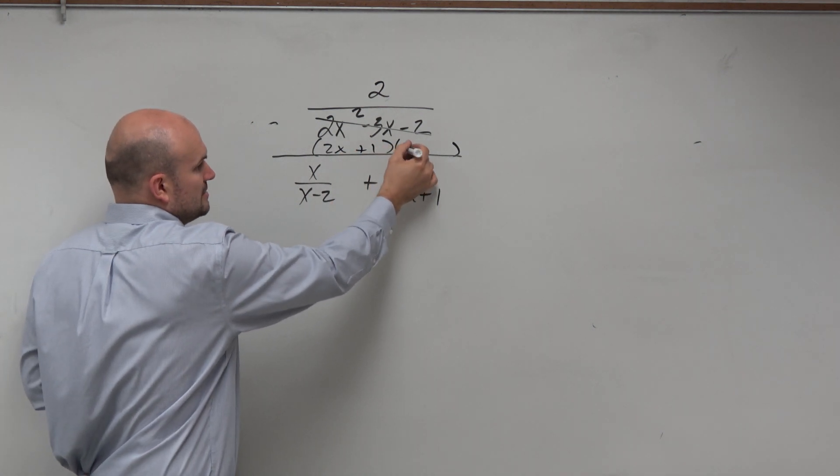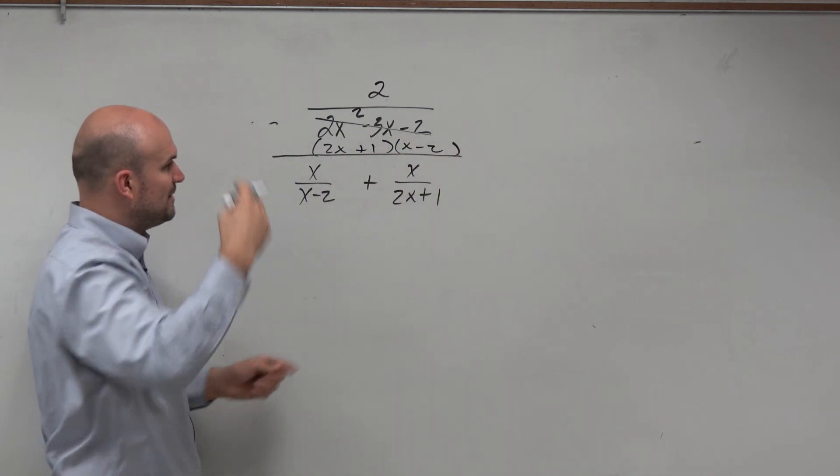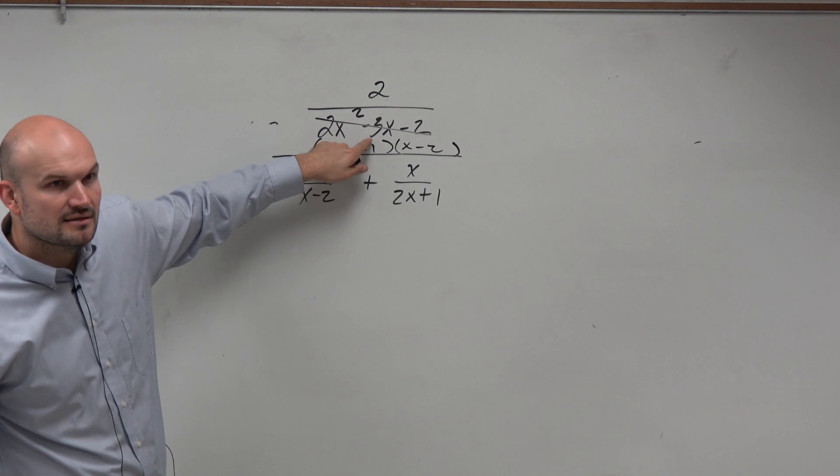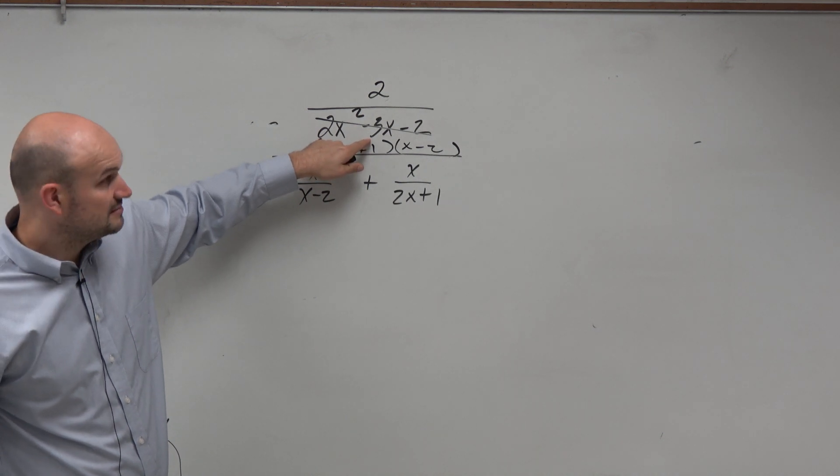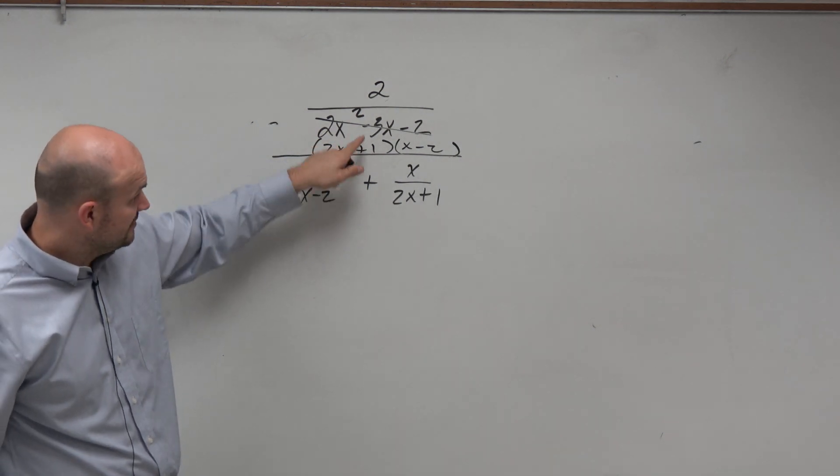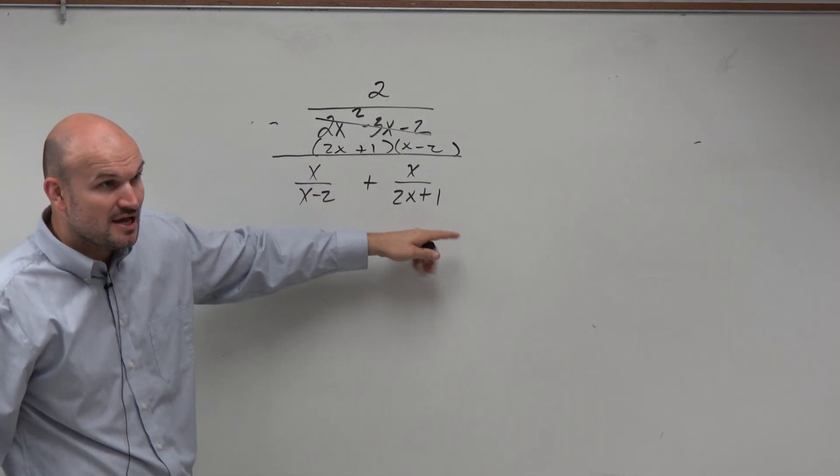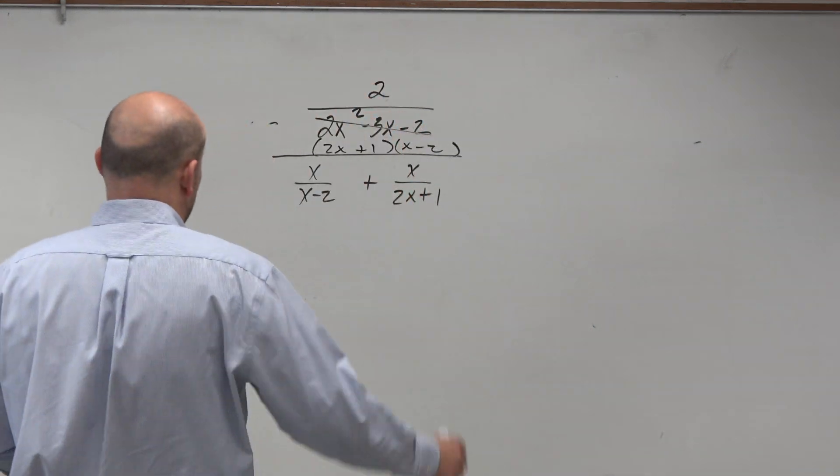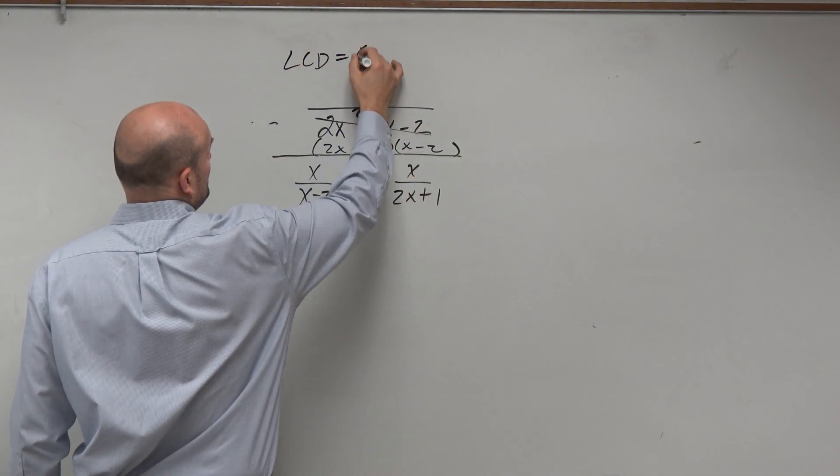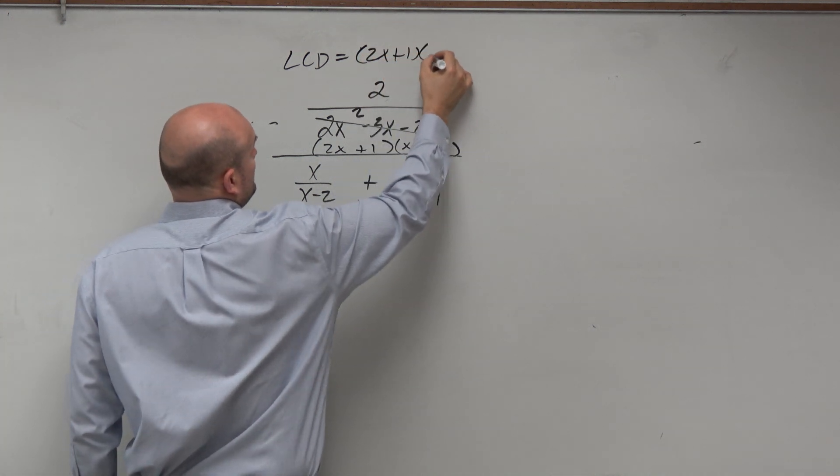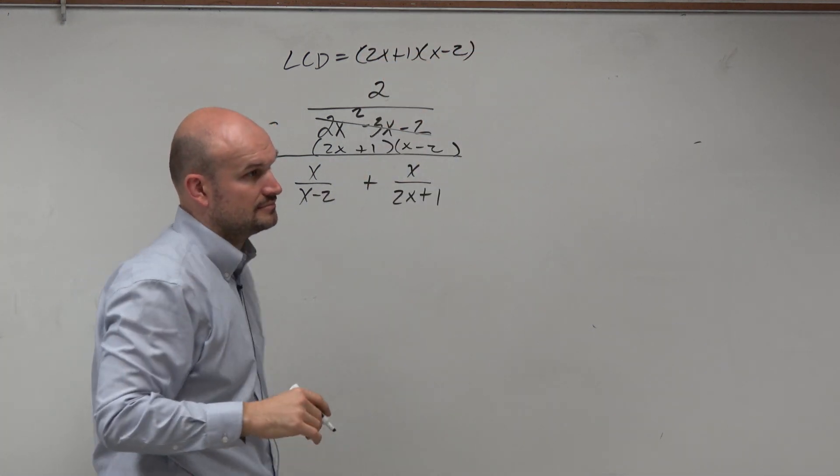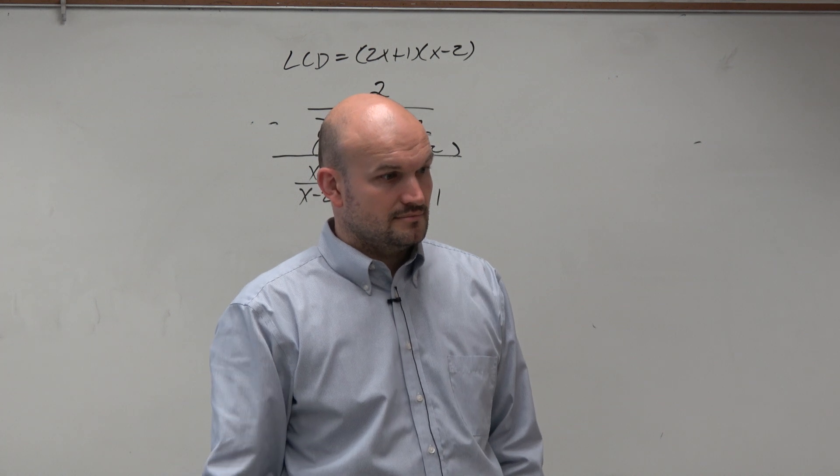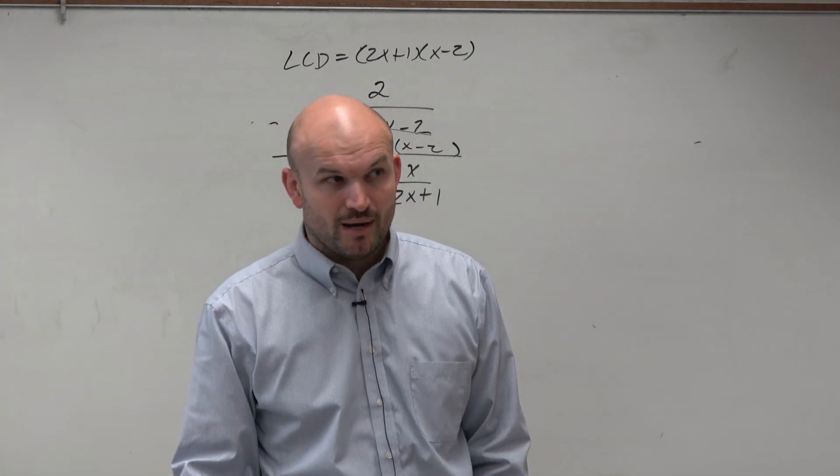2x plus 1 times x minus 2. When I multiply that out, does that give me that? It works. That is the factored form, those two denominators. So therefore, when I'm trying to find the LCM or the LCD, it's actually not that difficult. It's actually right in front of our eyes.